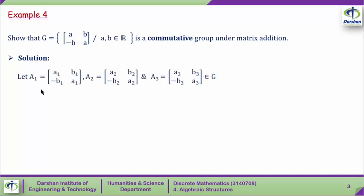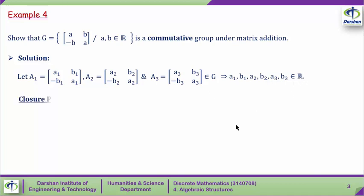For the solution, let us consider in general three matrices A1, A2, and A3 with entries [a1, b1; -b1, a1], [a2, b2; -b2, a2], and [a3, b3; -b3, a3] respectively, where all entries are from the set of real numbers. We want to prove that G is a commutative group under matrix addition.